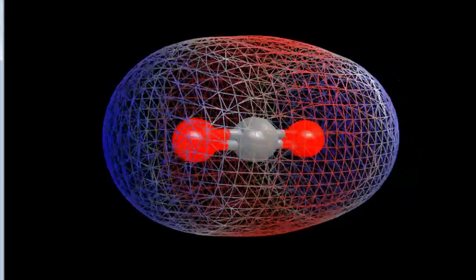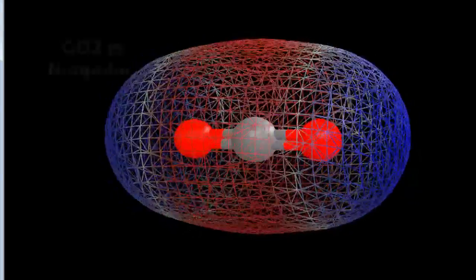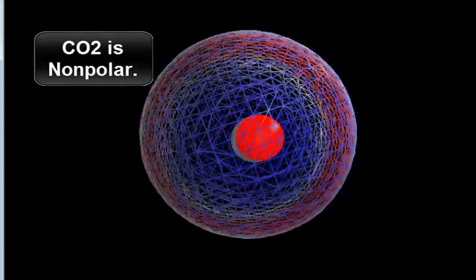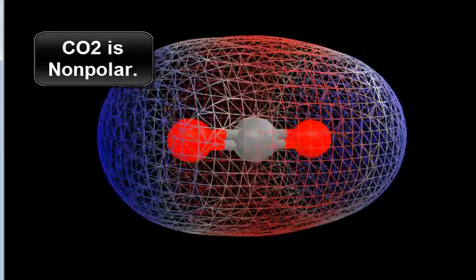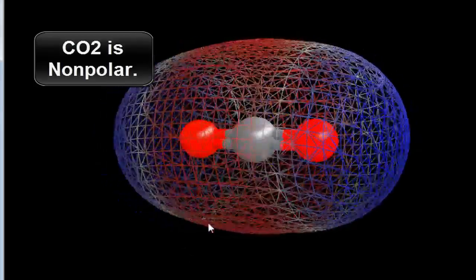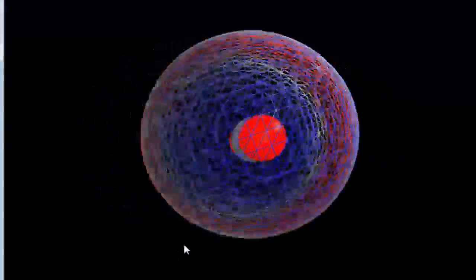They cancel out, and because they cancel out, it's a non-polar molecule. So CO2 is a non-polar molecule because of the symmetrical nature of those two oxygens double bonded to the carbon.